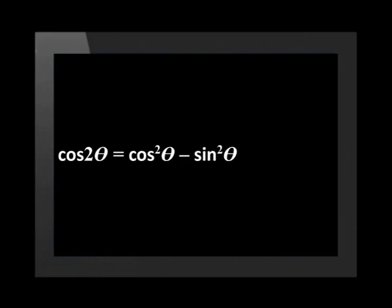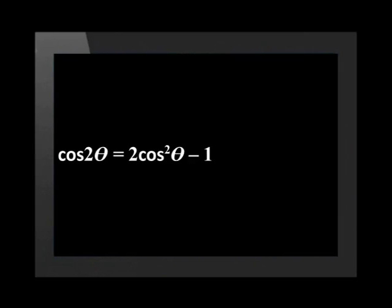It is useful to look at what you are trying to prove in order to select the most useful option. If your expression involves sine theta and cos theta, use cos 2 theta equals cos squared theta minus sine squared theta. If your expression involves sine theta only, use cos 2 theta equals 1 minus 2 sine squared theta. Similarly, for an expression involving cos theta only, use cos 2 theta equals 2 cos squared theta minus 1.